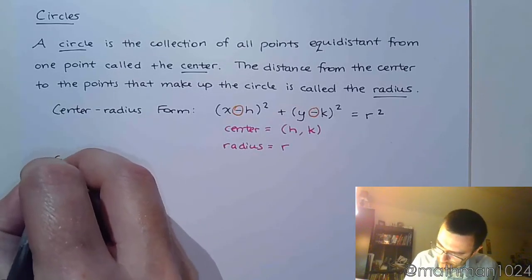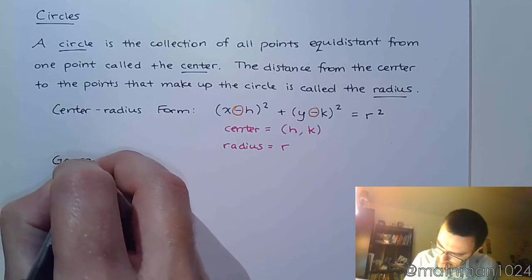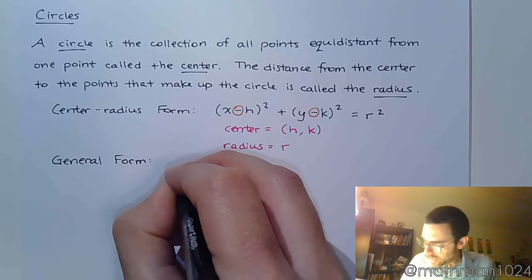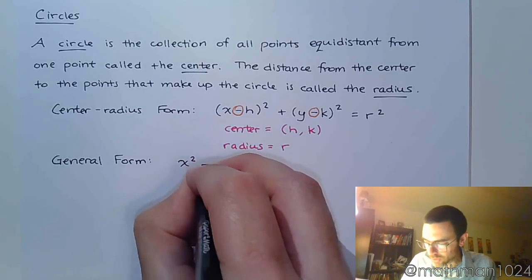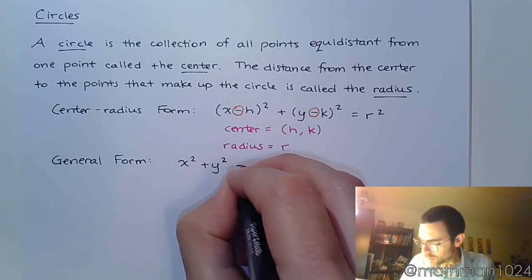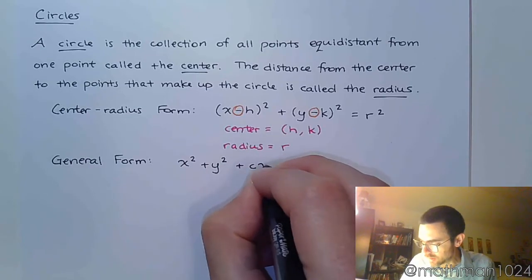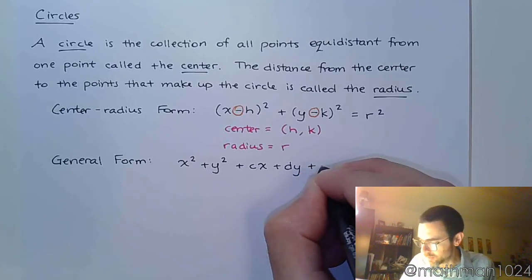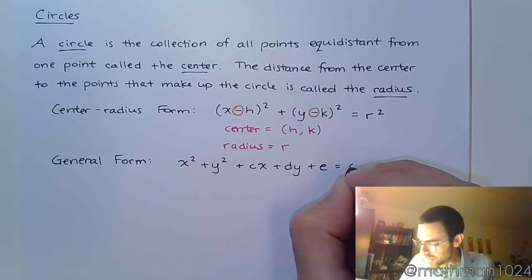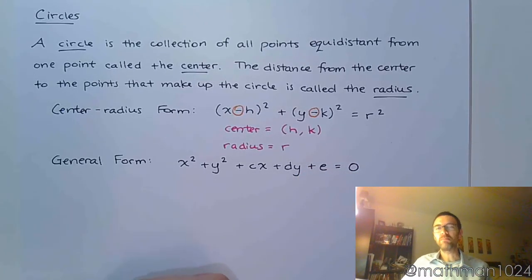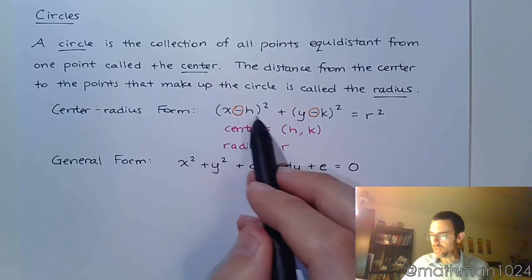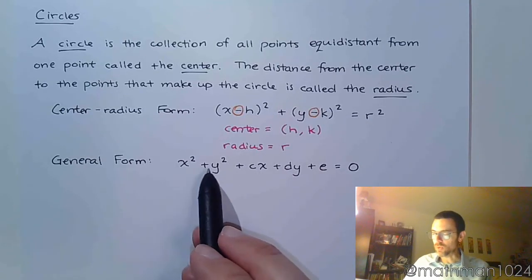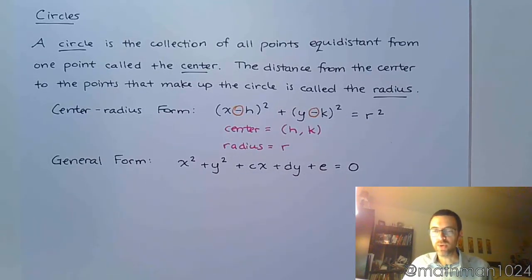Then we have another form called the general form. It looks kind of crazy: x squared plus y squared plus cx plus dy plus e is equal to 0. Basically, that is what you get if you take the center-radius form, square everything out, and order the terms as x squared, y squared, x, y, and the constant.